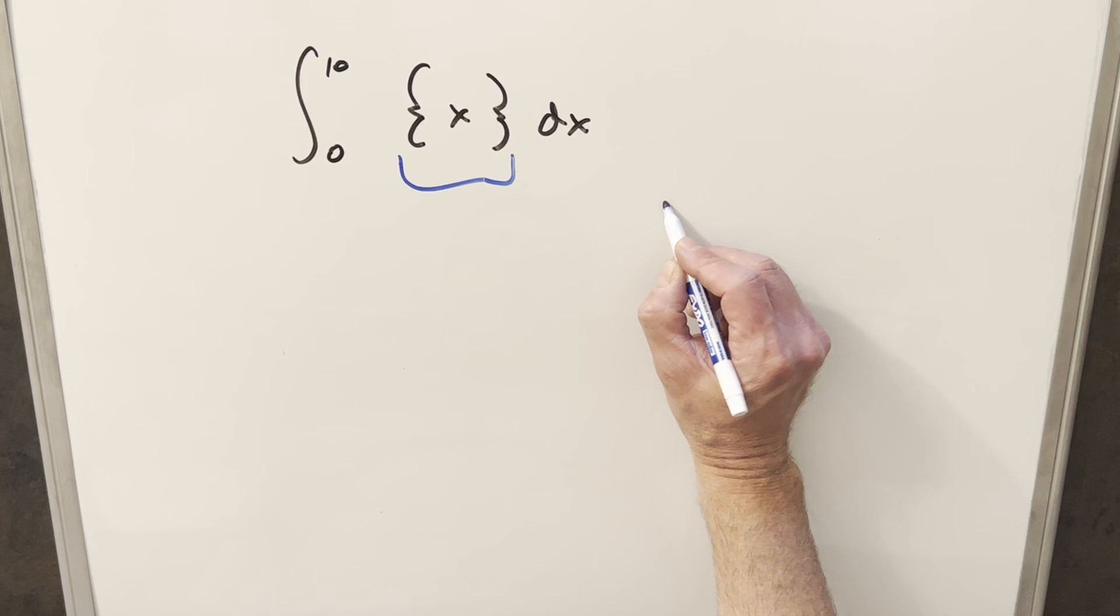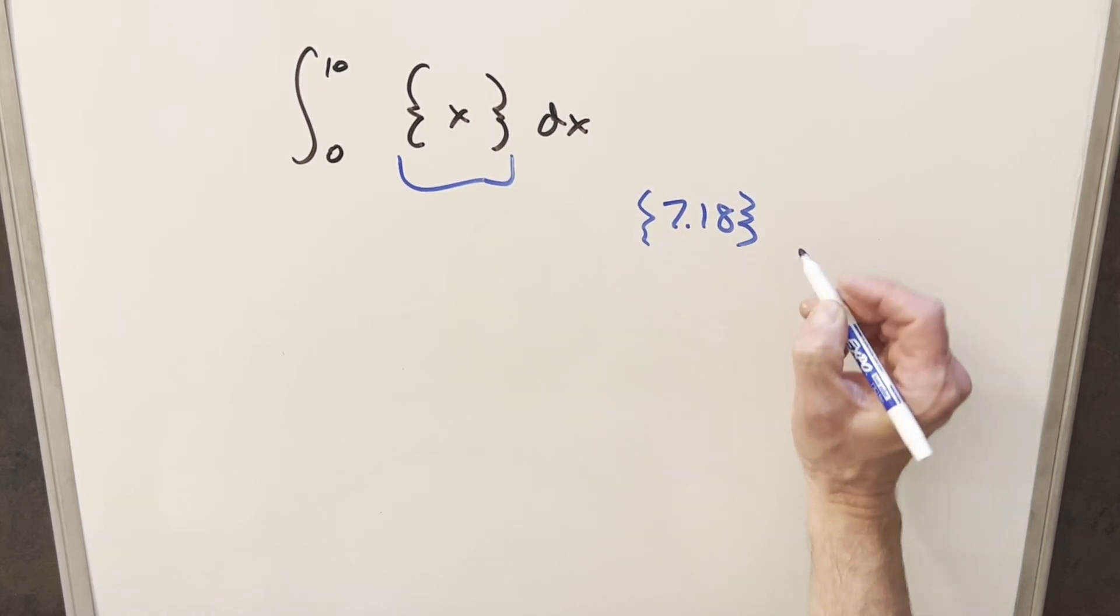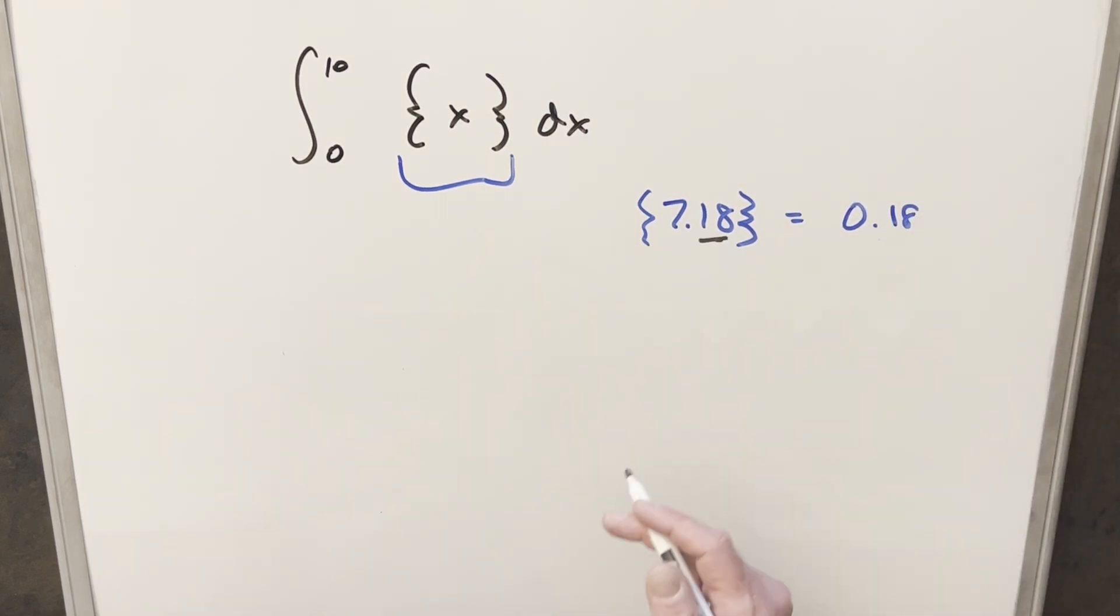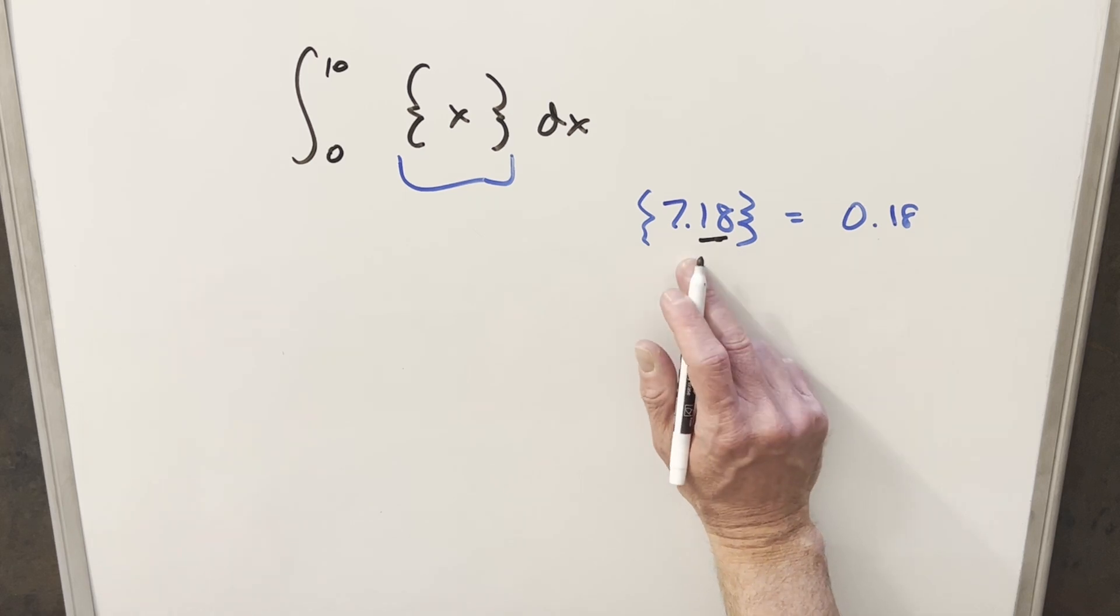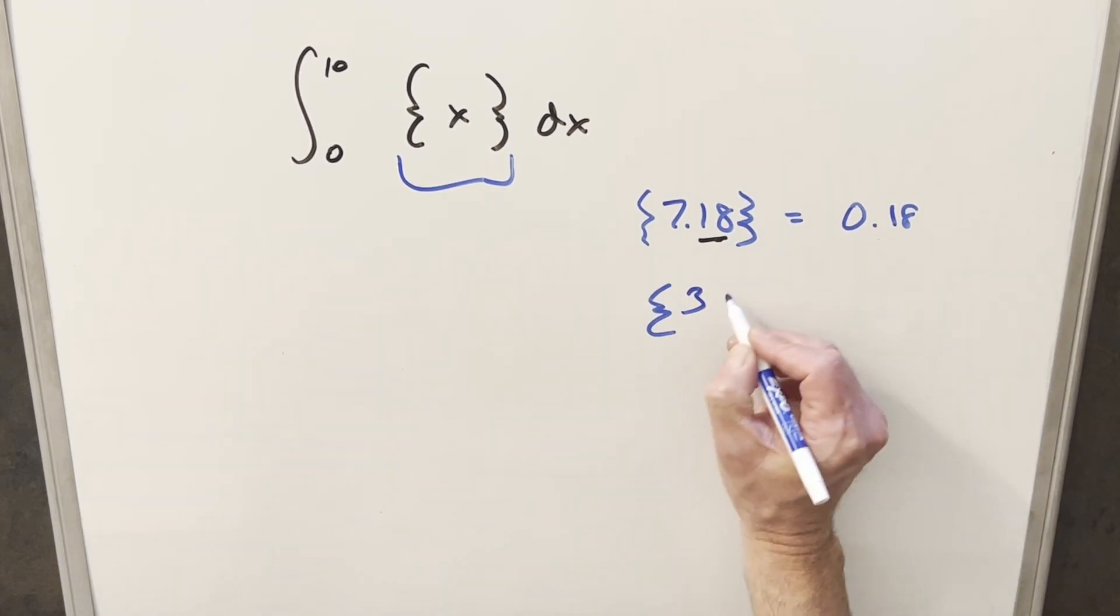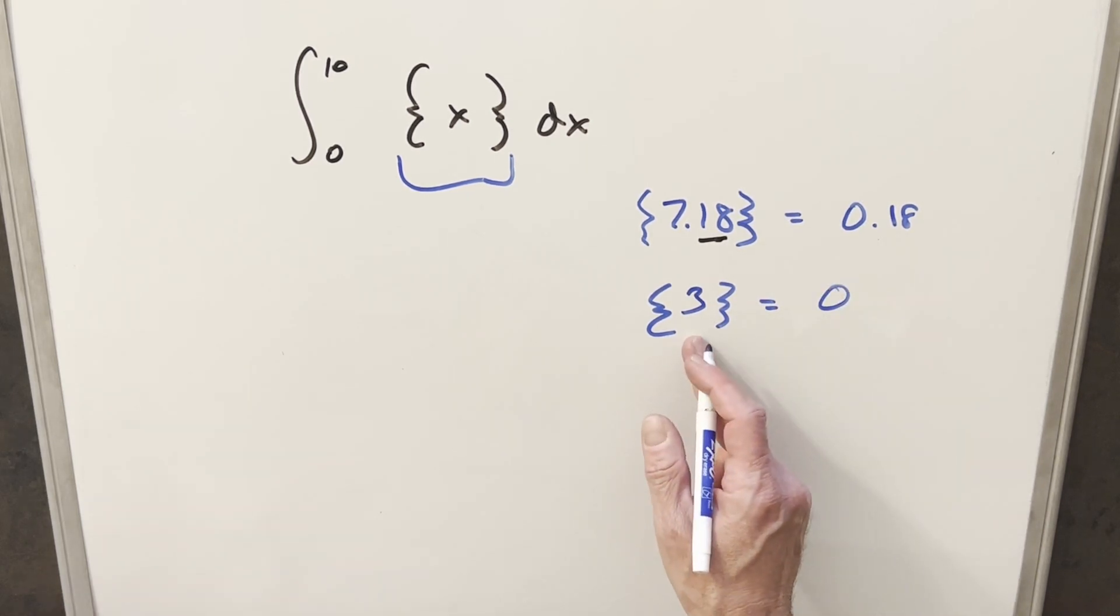So let's first just go over what this means to have a fractional part. If we take an example, like let's just say we want the fractional part of 7.18. This is just going to be 0.18. So just like it sounds, it always returns the fraction part or the decimal part of the number. And so also if we had something like the fraction part of 3, well that's just going to return 0 because there is no fraction part or no decimal part.